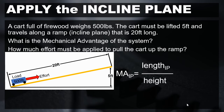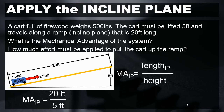Again, the calculation for mechanical advantage for the inclined plane is the length of the inclined plane divided by the height. In this case, the length of the inclined plane is 20 feet. The height that we have to overcome is still 5 feet. Feet divided by feet cancel out, and therefore we're left with a mechanical advantage of 4.